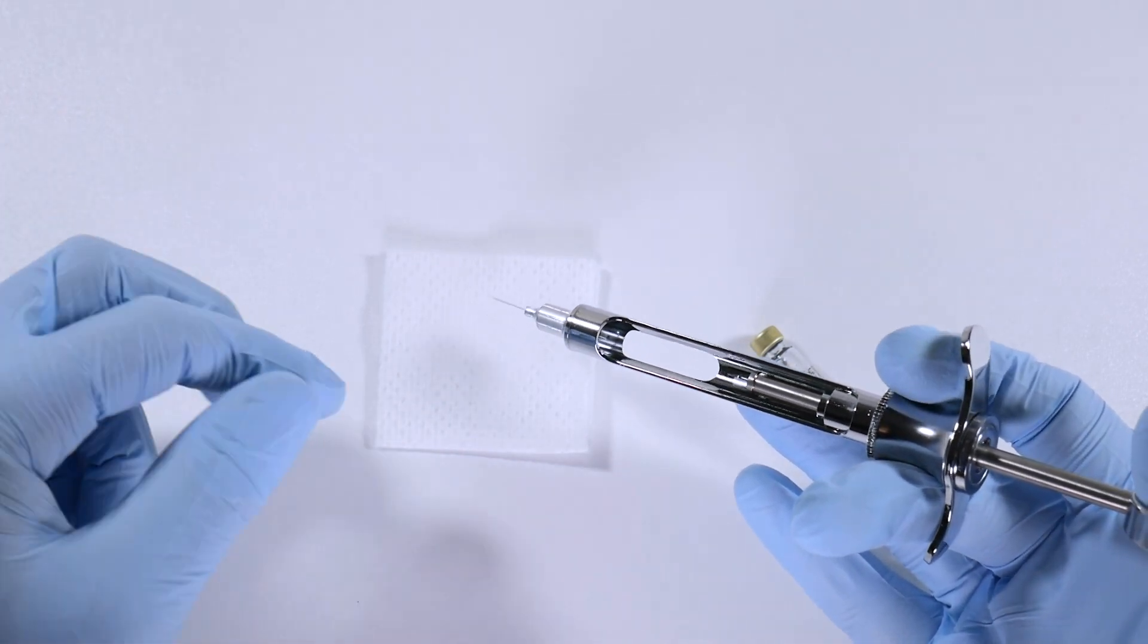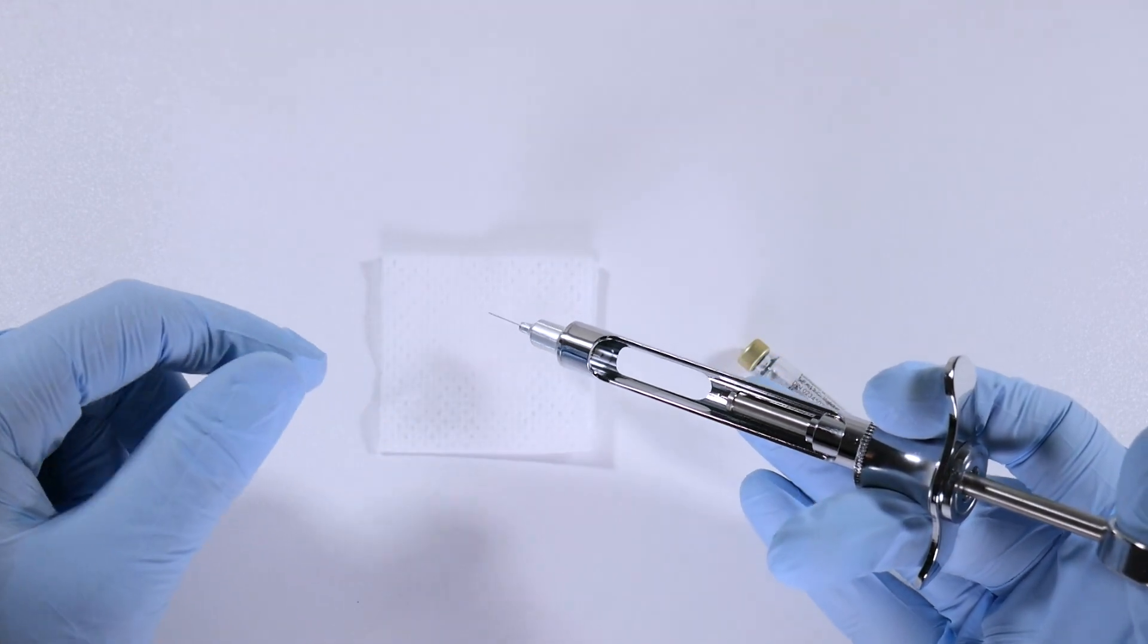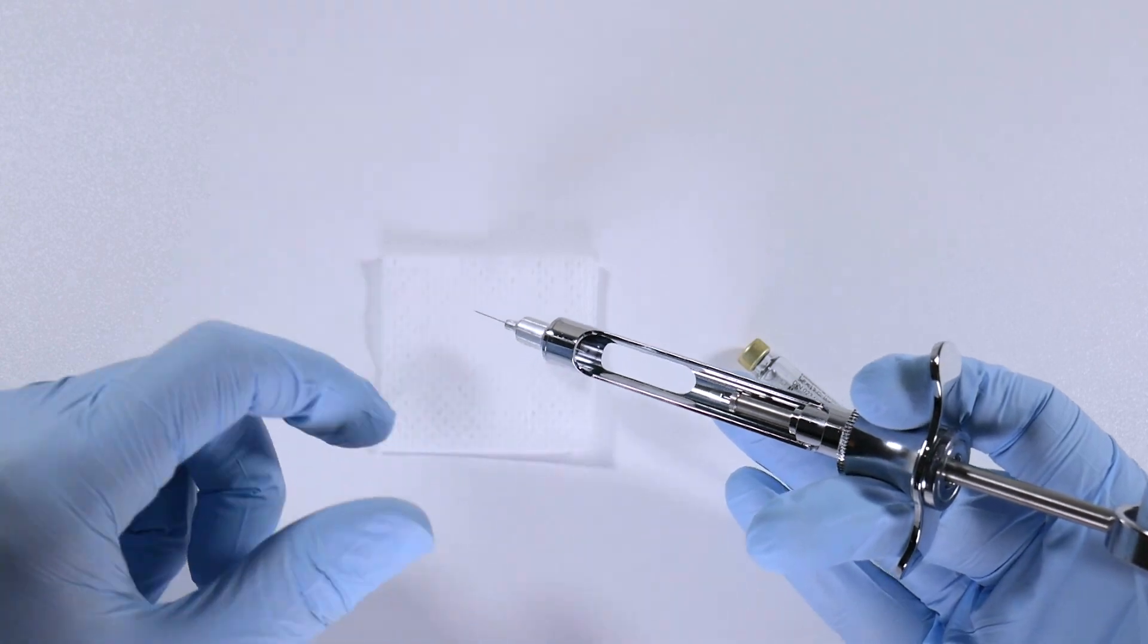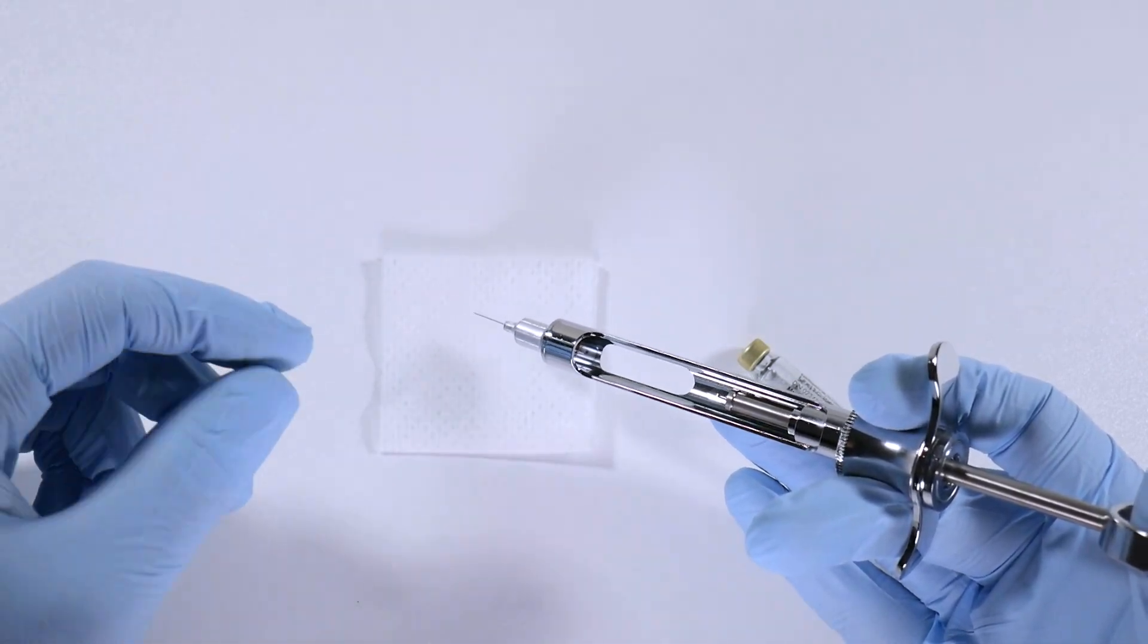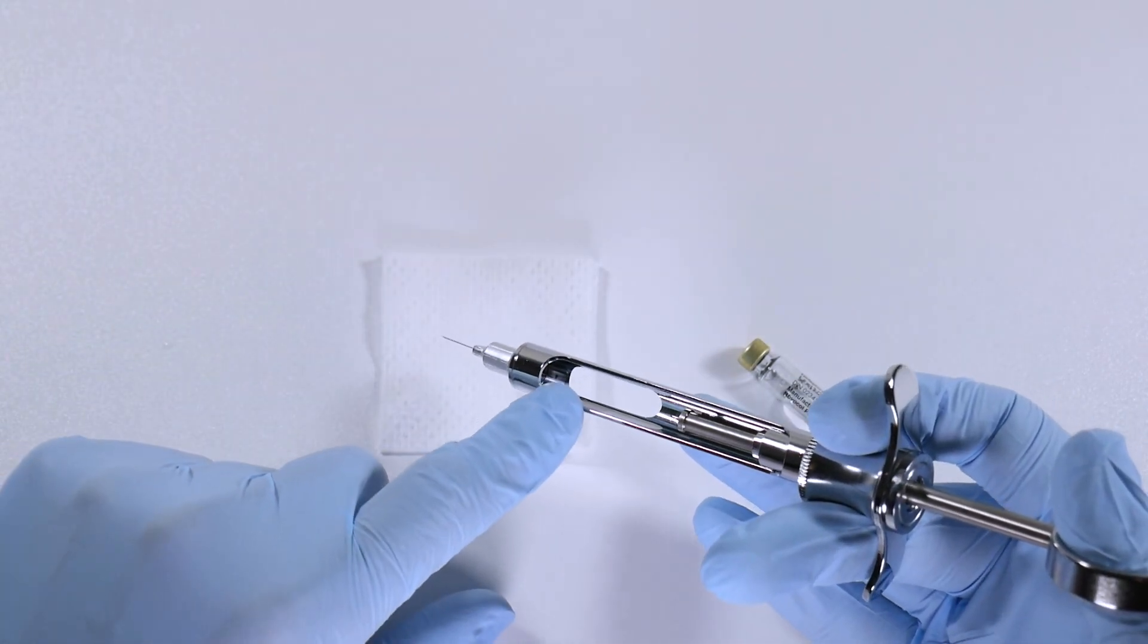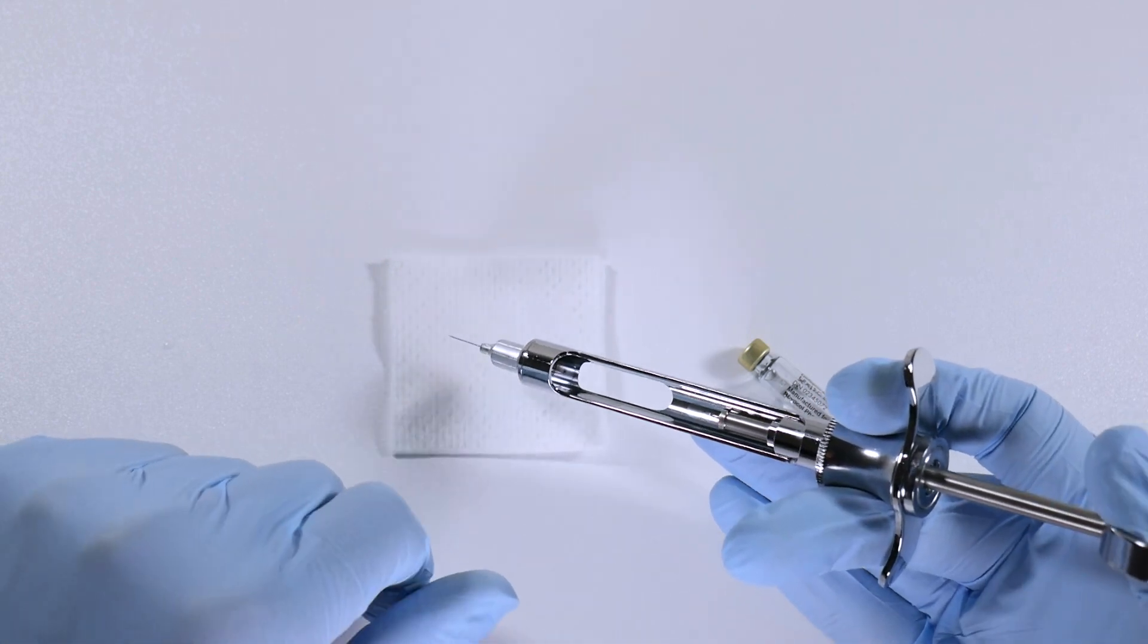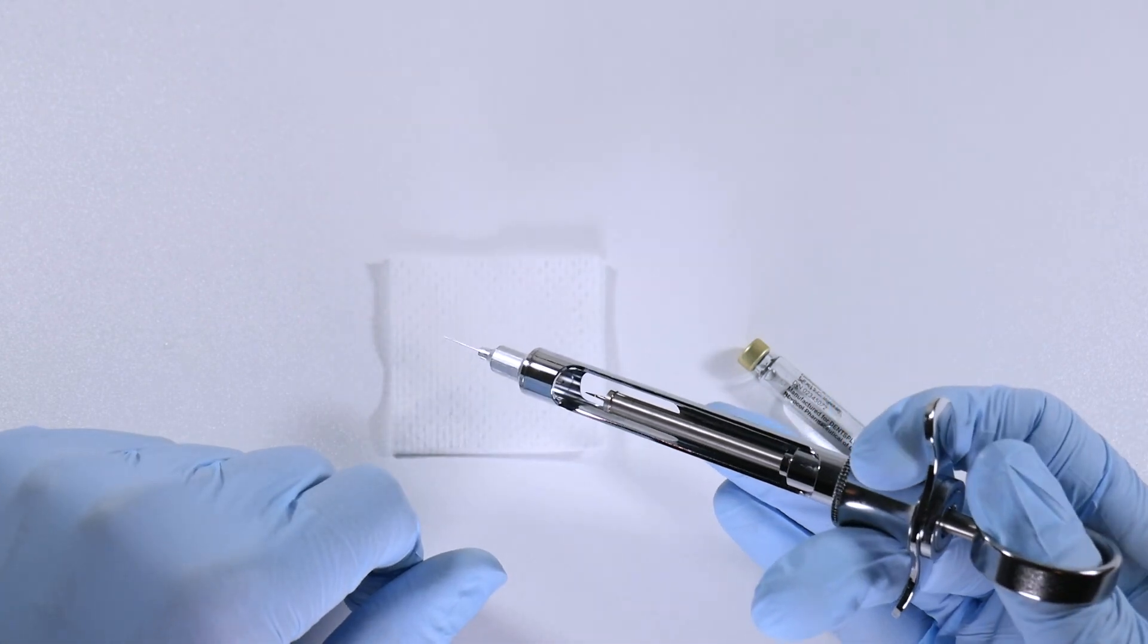Also, if the blood really shoots into there, again, probably high pressure, likely in an artery. If it's just oozing in there a little bit, again likely not an artery, you're probably in a vein. So good to know